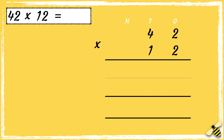Now that we're set up, we're ready to multiply. First we'll multiply two by two — two times two is four. Then we can multiply two by four tens, so two times four is eight.